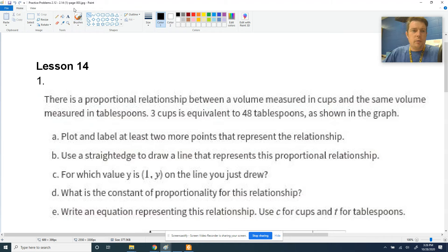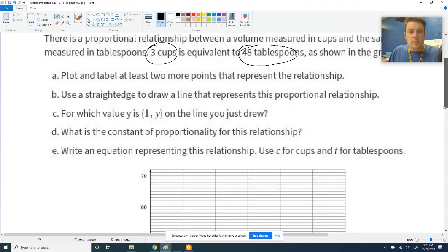It's kind of all coming together here and the relationship that we're looking at is volume measured in cups to the same volume measured in tablespoons. So it's just like a conversion, tablespoons to cups. Three cups is equivalent to 48 tablespoons. So that's the point that you're about to see on the graph, 3 cups per 48 tablespoons. And then we've got to do some things with this.